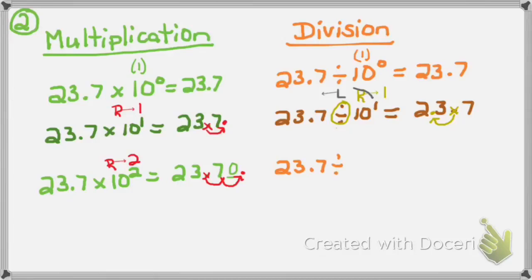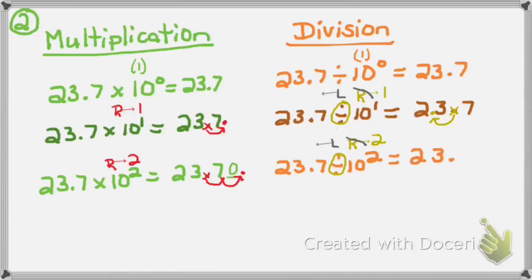What's 23 and 7 tenths divided by 10 to the 2nd power? I think with the same philosophy: 10 to the 2nd power is greater than 1, meaning I move my decimal to the right, and my exponent is 2 so I go two places. But I double-check my operation — this is division, the opposite of multiplication, so I'll move my decimal in the opposite direction, to the left. I take my given number 23.7, cross out the decimal, and move it one, two places to the left. So 23 and 7 tenths divided by 10 to the 2nd power equals 0 and 237 thousandths.